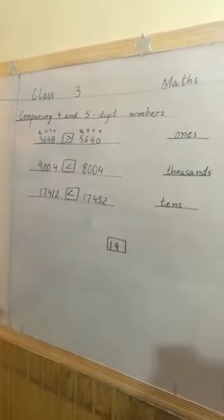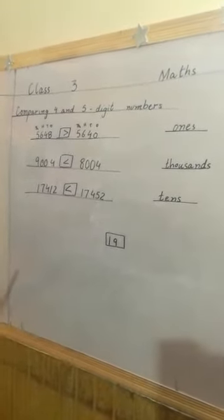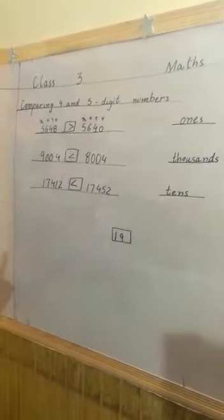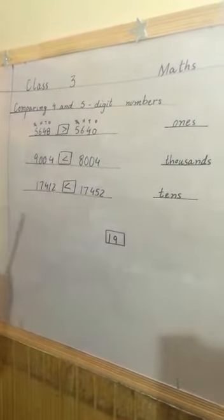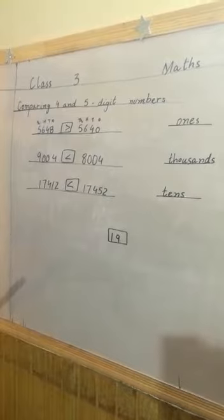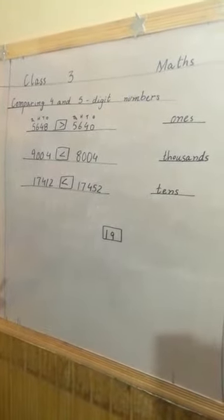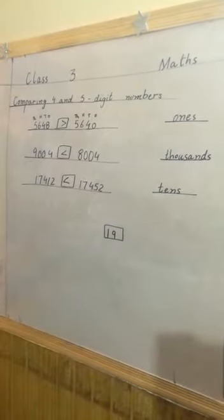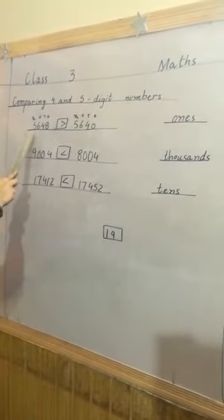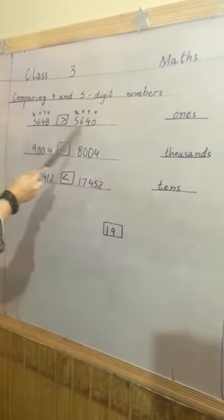It means greater than less than 2 numbers. The crocodile sign - you know that crocodile always wants to eat big things. So crocodile opens its mouth on the side of big numbers. We have 2 numbers here: 5, 6, 4, 8 and 5, 6, 4, 0. Which number is greater?